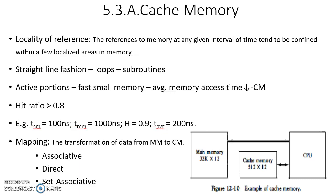Earlier computers did not have cache memory. Cache memory came into existence after many researchers and scientists observed the execution of a large number of programs and found something interesting: the reference to memory at any given interval of time tends to be confined within a few localized areas of memory.